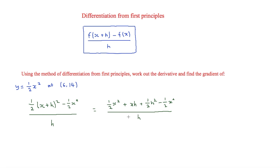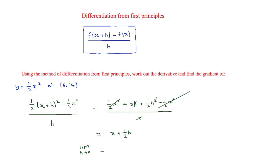We can cancel the ½x² terms. All remaining top terms have an h and the bottom has h, so we cancel those, leaving x + ½h. We then limit h to 0, and since ½h becomes 0, our derivative is simply x.